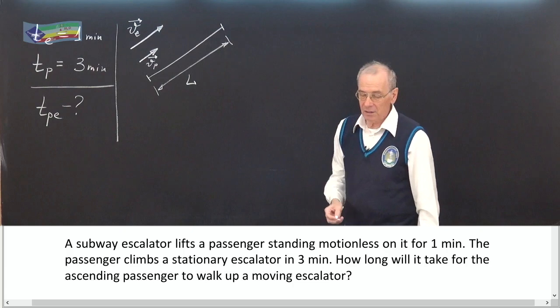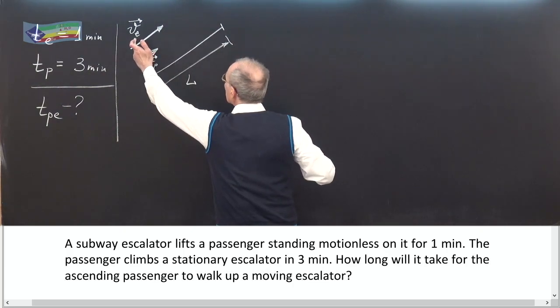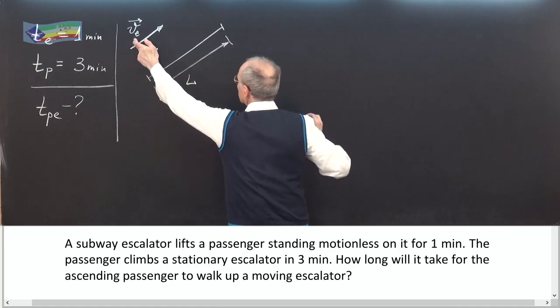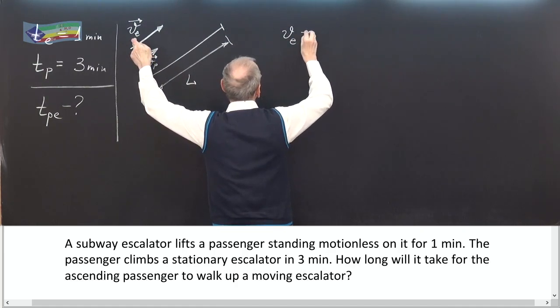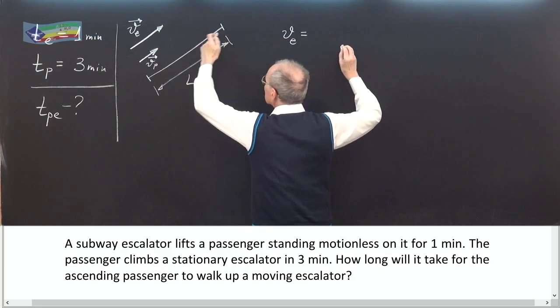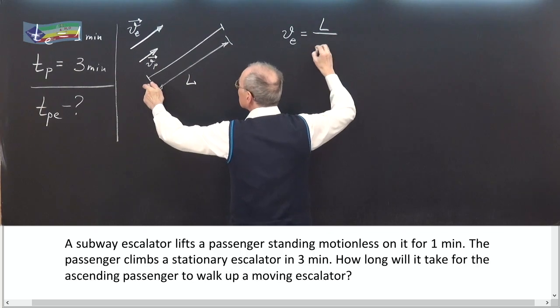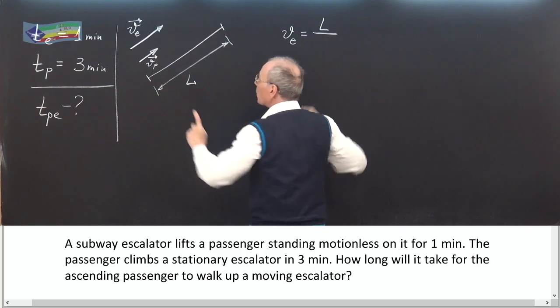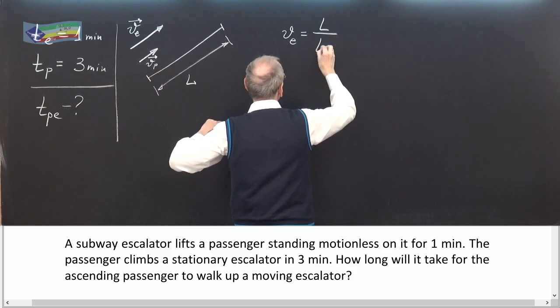In this case we can write when only escalator works, V escalator is the length of the escalator L divided by TE, when the only escalator works, TE, T escalator.